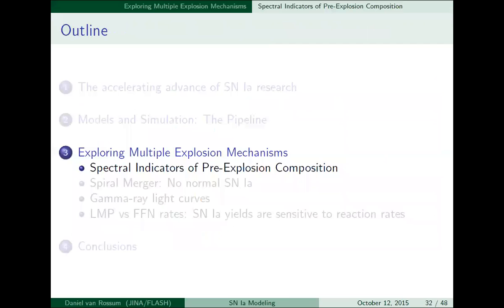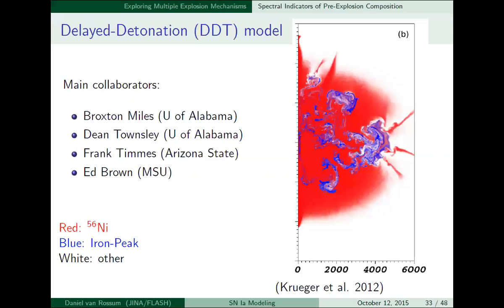Now let's see what we can actually learn from doing the simulations. Here are a few examples of recent studies. One thing we can do is take an initial setup, modify initial conditions, and see how that affects the outcome in terms of nucleosynthetic yields or light curves and spectra. What we did here is use explosion simulations by Kruger et al. and varied the amount of metals — previously processed material from other stars mixed into the gas of the white dwarf.